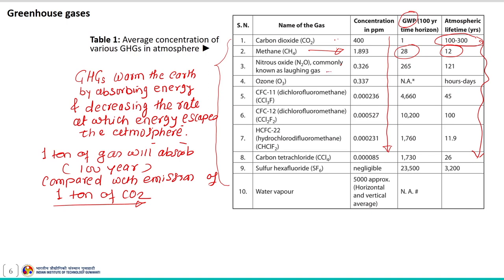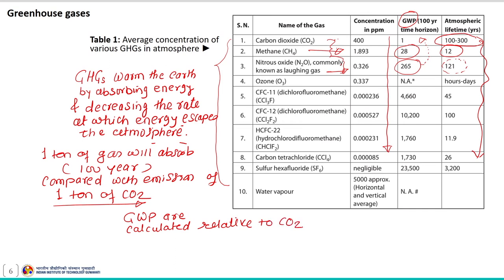Methane's capacity to absorb substantially more energy than CO2 gives it a global warming potential of around 28. The global warming potential of nitrous oxide is 265 times that of CO2, with an average residence time of 100 years. That means, for a given amount of mass, they hold substantially more energy than CO2. Hence, global warming potentials are calculated relative to carbon dioxide, because we try to measure the impact of various pollutant gases in the form of carbon dioxide equivalent.